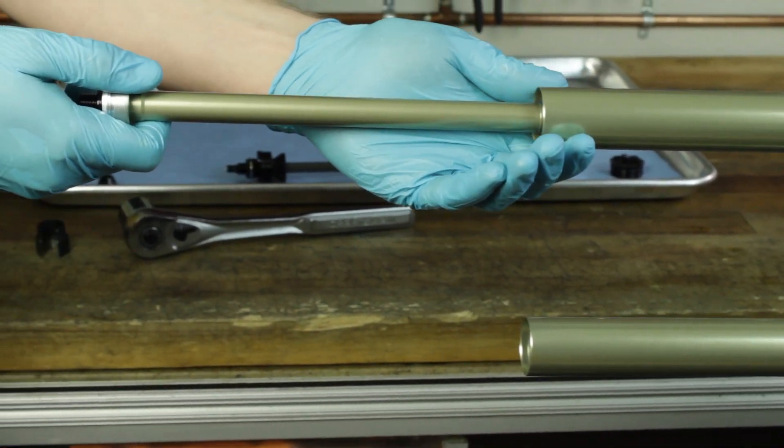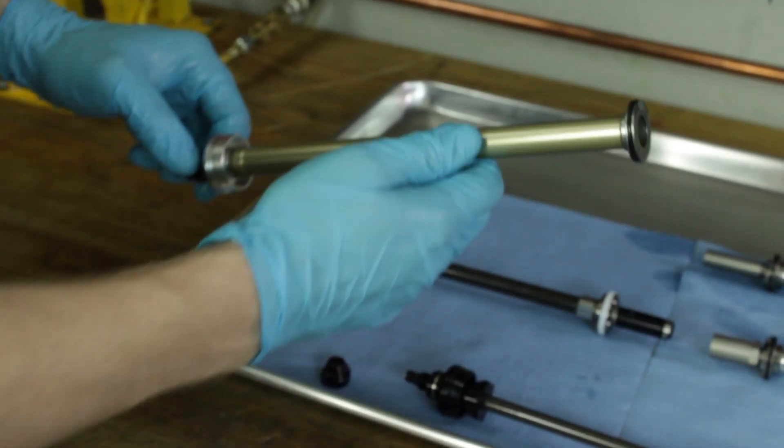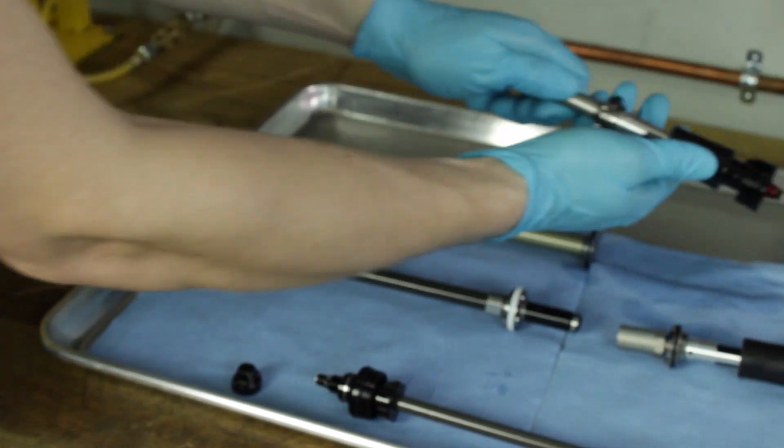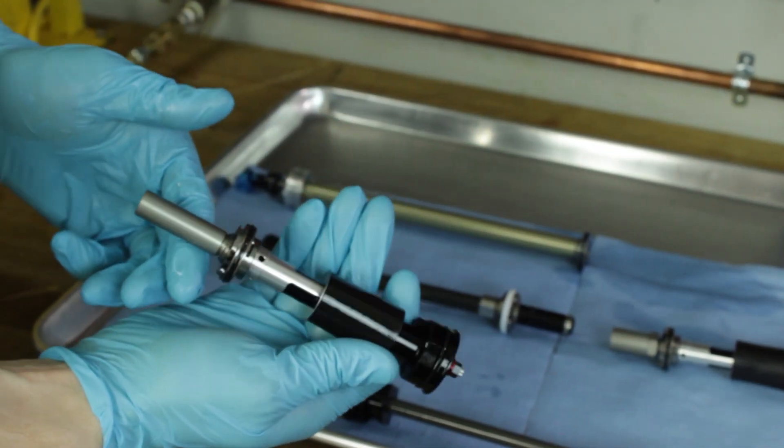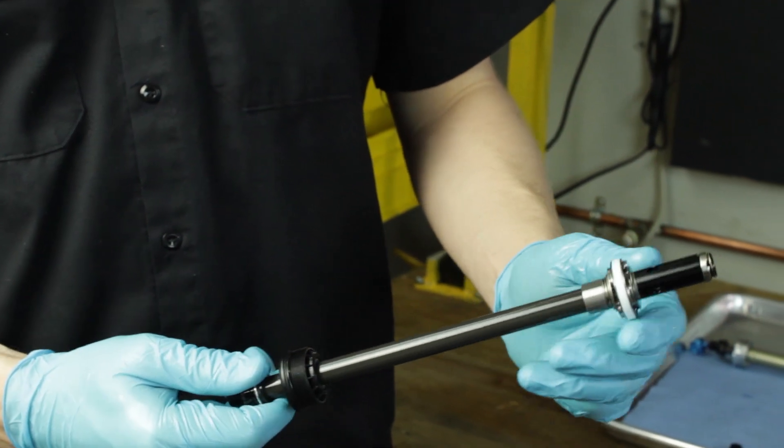If you're disassembling a matic expert, you'll notice that the rebound assembly looks different from the matic pro. The major difference between the matic pro and the matic expert is that the pro utilizes a half-cartridge damper system while the expert utilizes an in-leg damper system.